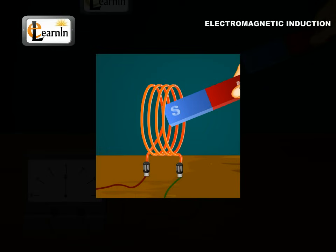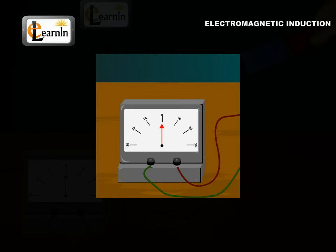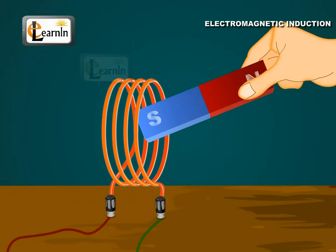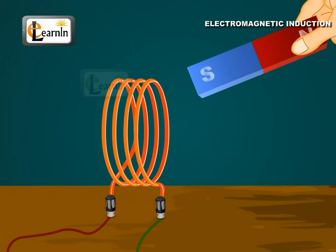Do you observe any deflection when you just hold the magnet stationary near the coil at rest? No. A relative motion of a magnet and a coil induces the current in the coil.